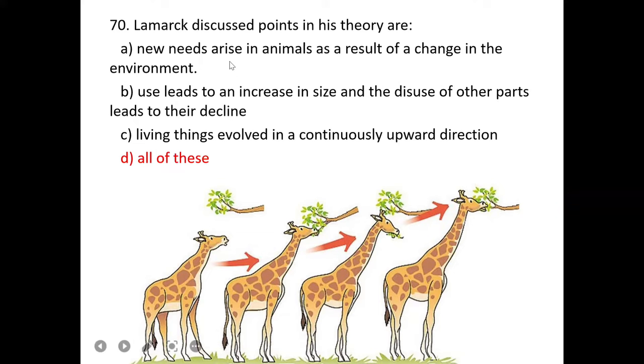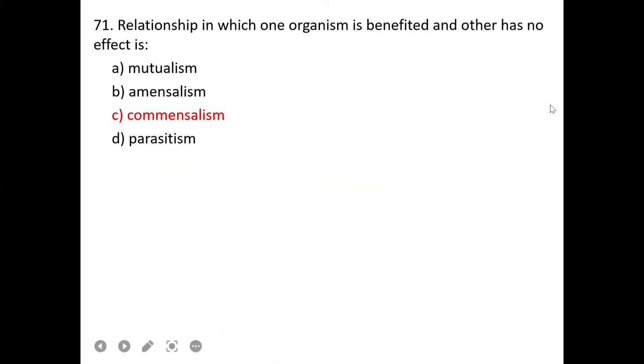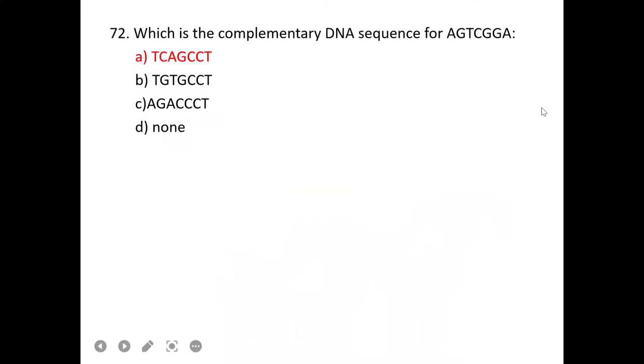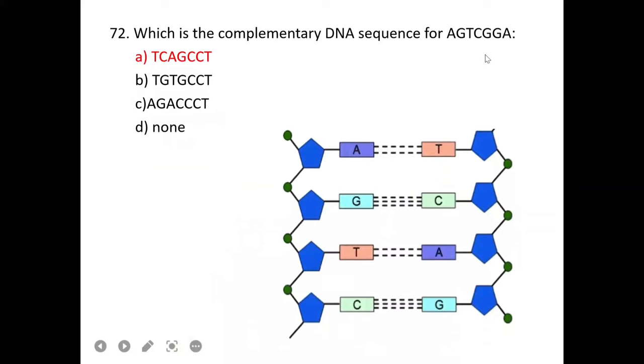Relationship in which one organism is benefited and the other has no effect is commensalism. Which is a complementary DNA sequence for this given sequence? Adenine pairs with thymine, and cytosine pairs with guanine. Thymine pairs with adenine and cytosine pairs with guanine. So the correct option is A.